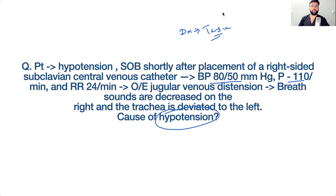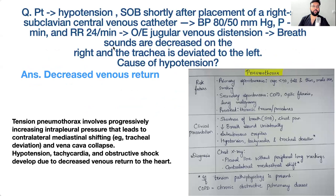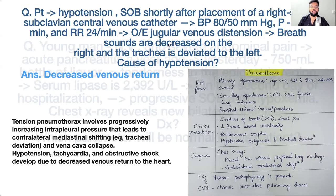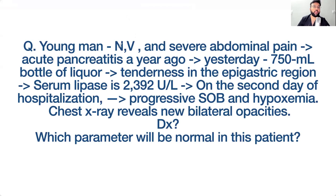Why does this patient have hypotension? Same explanation as before — the lung and blood vessels are compressed, resulting in less venous return and less preload. Two complications can occur when inserting a central line: you can injure the pleura causing pneumothorax, or you can injure the common carotid artery.